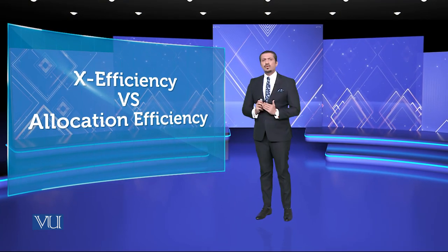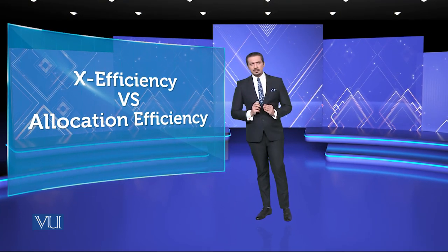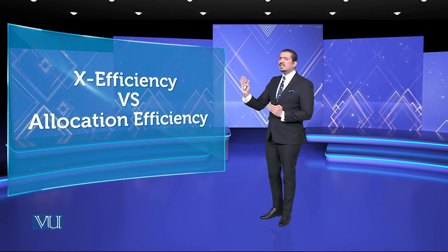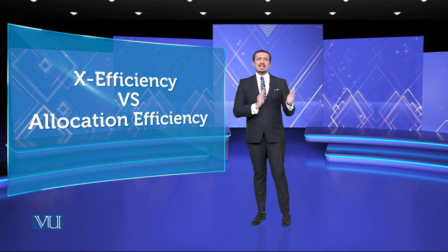Module 74 میں ہم سمجھیں گے کہ allocative efficiency کسے کہتے ہیں اور X-efficiency سے اس کا کیا فرق ہے۔ X-efficiency کا factor یہ ہے کہ individual اور employee کی total resource capability اور capacity کتنی ہے۔ یہ سمجھنا ضروری ہے کہ human mind یا individual، جسے آپ entrepreneur یا businessman بنانا چاہتے ہیں، کن چیزوں سے drive ہوتا ہے۔